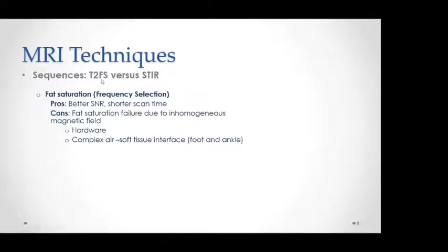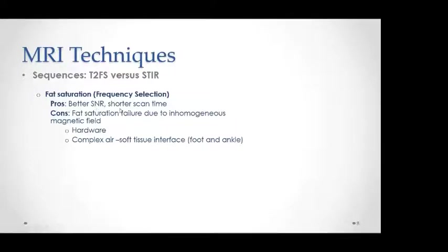For sequences in musculoskeletal injuries, we always use fluid-sensitive fat-saturated sequences — either T2 fat-saturated or STIR sequence. Fat saturation relies on frequency selection, providing better signal-to-noise ratio and shorter scan time than STIR. The disadvantage of T2 fat-saturated is that if there is inhomogeneity of the magnetic field, fat saturation will fail. This occurs in patients with hardware or complex air-soft tissue interfaces such as around the foot and ankle.